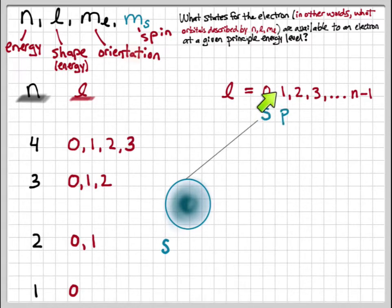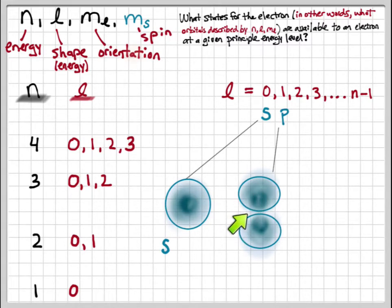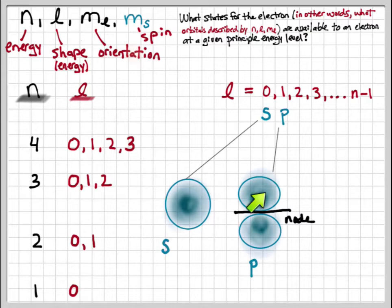At l equals 1, the orbital is called a p orbital. These have a dumbbell type of shape; the probability density is represented with shading. Notice that as you cross from one side of the orbital to the other, the probability of finding the electron goes to zero. Regions where the electron probability falls to zero within an orbital are called nodes, or a nodal region.